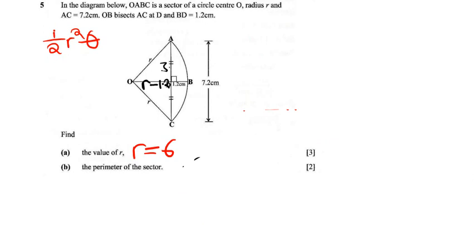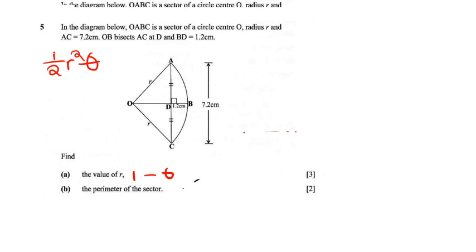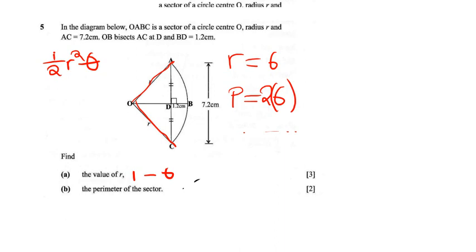Now we have to find the perimeter of a sector. The perimeter of a sector — if we have the radius, we just need to add the arc length to find the perimeter. So the perimeter is going to be 2R plus the arc length which is Rθ, so 2 times 6 plus 6 times θ. But do we know the angle theta? No, we don't, so I have to find the angle theta first.